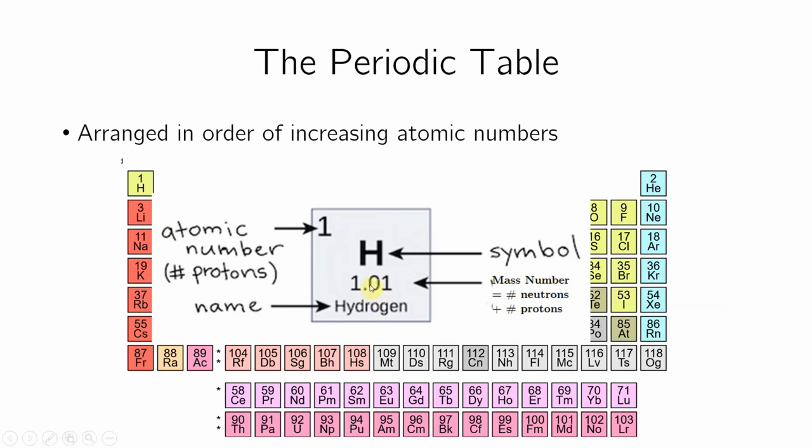I mentioned the mass number. This is the mass number here. This is the number of neutrons plus the number of protons. Hydrogen has no neutrons, only has a proton and an electron. So its mass number is 1.